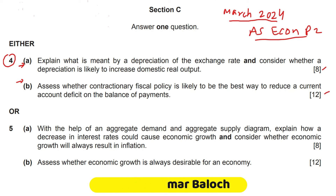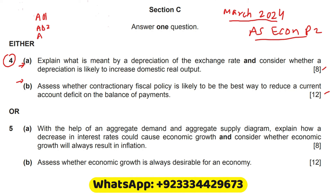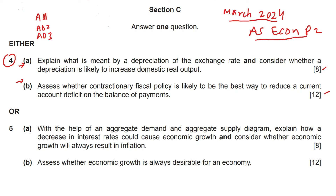Question number 4 part A and B both require three assessment objectives: Assessment Objective 1, 2 and 3. Assessment Objective 1 is knowledge, Assessment Objective 2 is analysis, and Assessment Objective 3 is evaluation. These assessment objectives carry different marks: 3, 3 and 2 marks respectively.